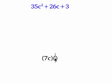well there's 1 and 35, but I'm guessing that it's going to be 7c and 5c, just because it adds up to 26. We'll see what happens with this, and the factors of 3 are 1 and 3.